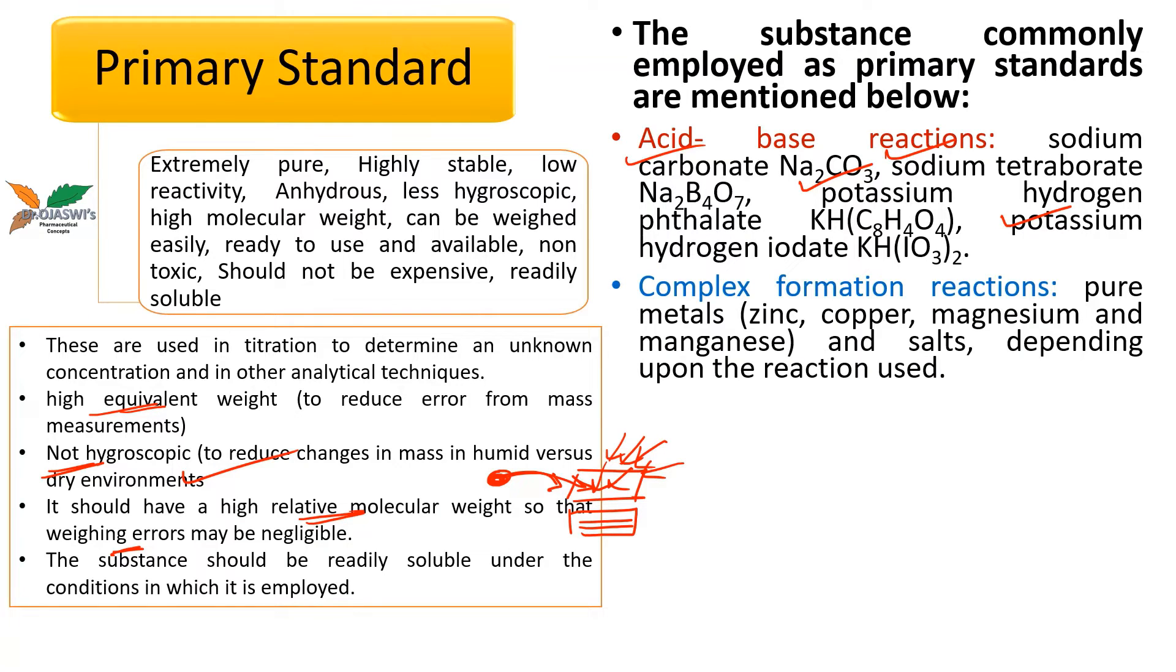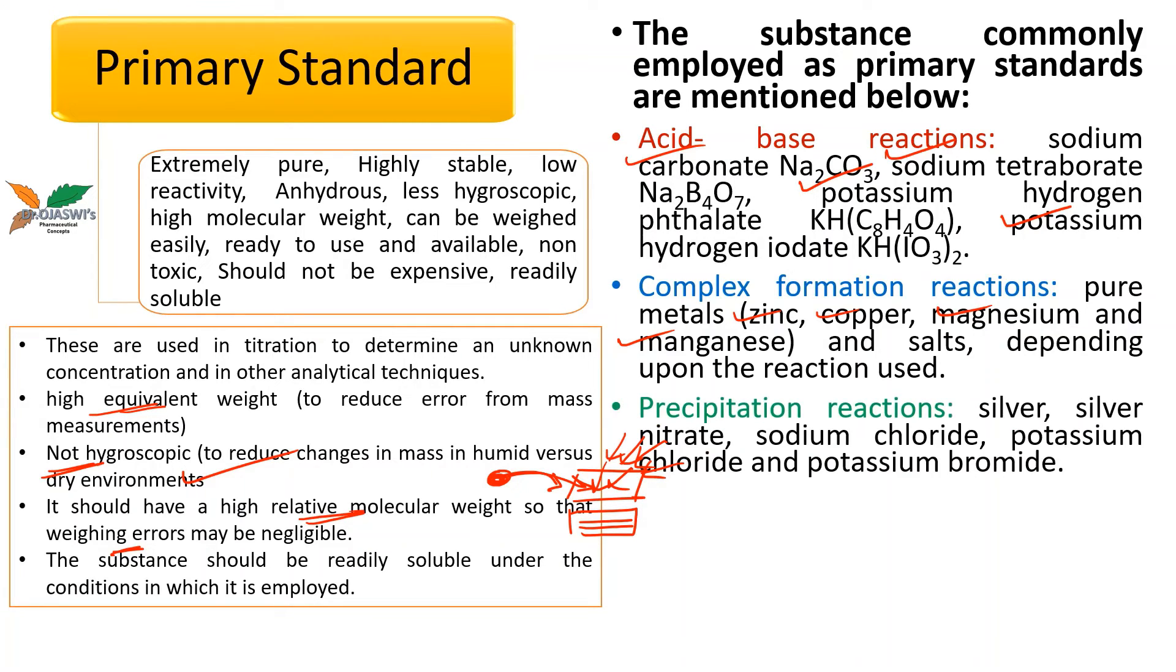For complexometric titrations, we usually use pure metals like zinc, copper, magnesium, manganese and salts, depending upon the reaction used. For precipitation reactions, silver, silver nitrate, sodium chloride, potassium chloride and potassium bromide can be used as the primary standards.